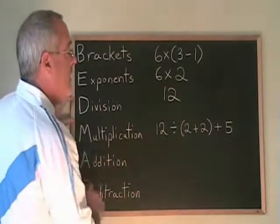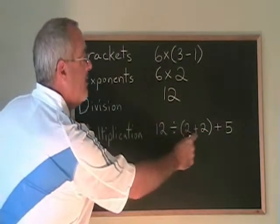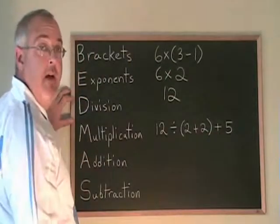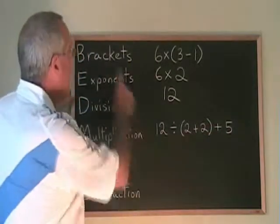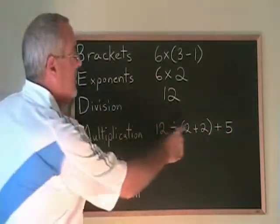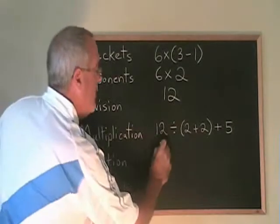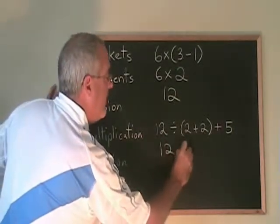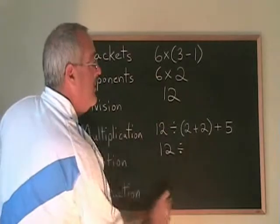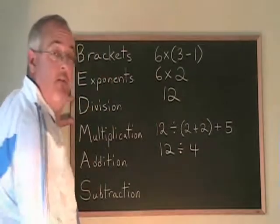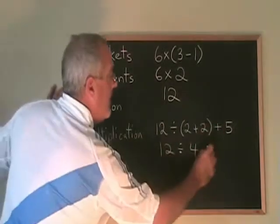In this second example, we have divided by, plus, and plus. But there's a bracket. Bracket comes first. We have to do the 2 plus 2 first. We copy down 12 divided by, 2 plus 2 is 4, we write that in place of the bracket, and we copy down the plus 5.